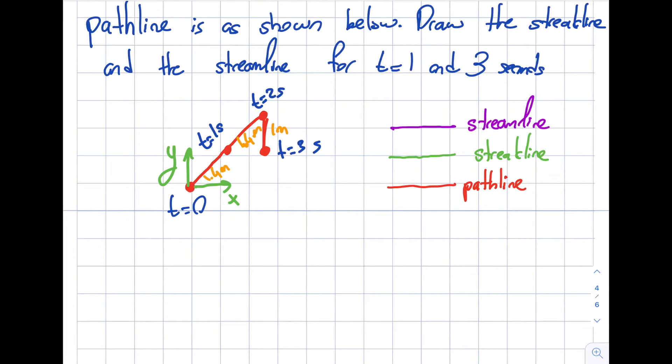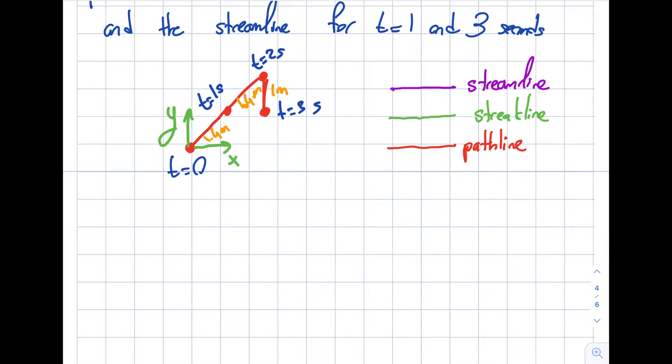Let's go ahead and do it. First is t equals one second. If I have path lines, calling this the origin, here is what happens at t equals one second. It traveled from here to here, 1.4 meters. So this is my streak line at t equals one.